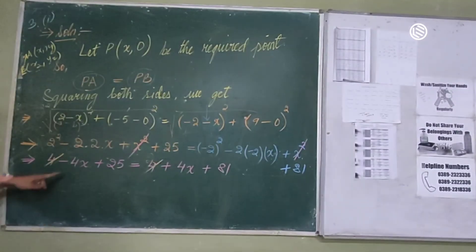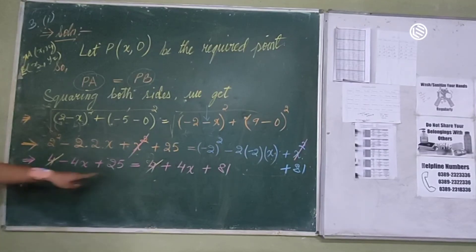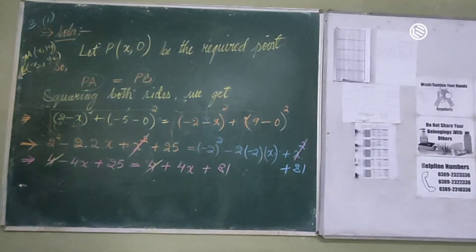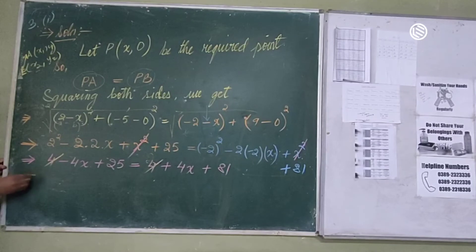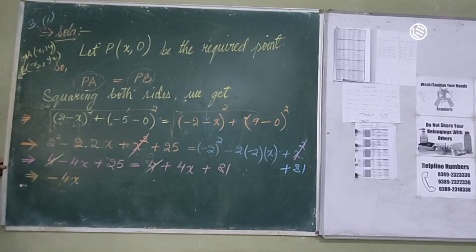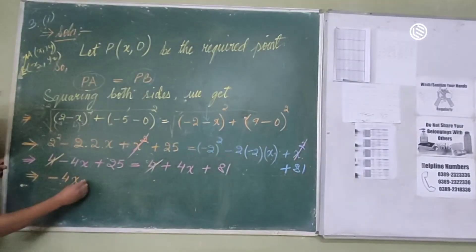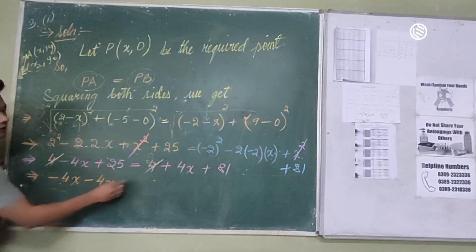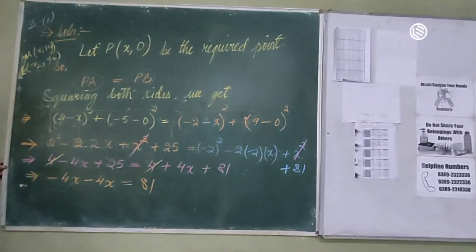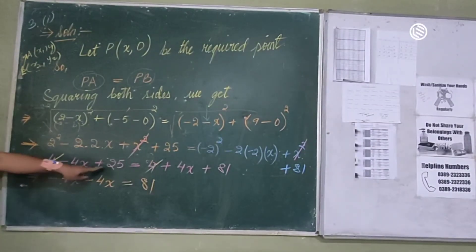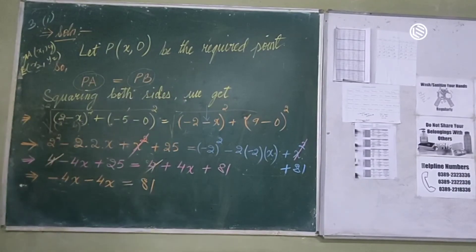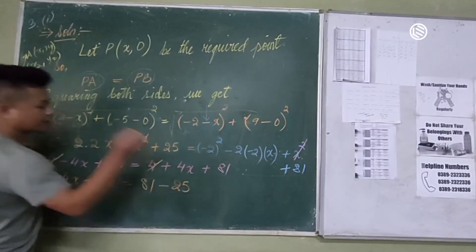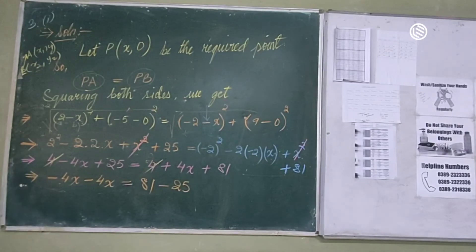Conserve it: minus 4x. Minus 4x plus 4x — conserve it. Minus 4x. 4x. Minus 4x. 8. So we have minus 8x equal to 81 minus 25, which is 56.